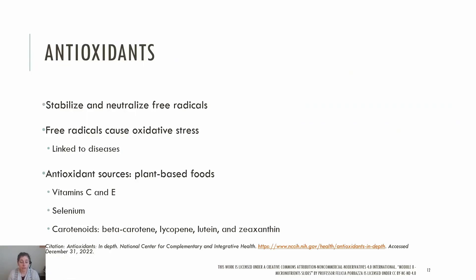Antioxidants are molecules that can donate an electron to stabilize and neutralize free radicals, which are unstable compounds that are highly reactive. Free radicals can cause oxidative stress, which can lead to cell damage. Diseases associated with oxidative stress include cancer, cardiovascular disease, diabetes, Alzheimer's disease, Parkinson's disease, and eye diseases such as cataracts and age-related macular degeneration. Sources of antioxidants include plant-based foods like fruits and vegetables. Dietary antioxidants include vitamins C and E, selenium, and the carotenoids: beta-carotene, lycopene, lutein, and zeaxanthin.